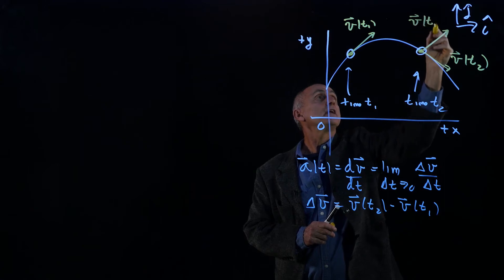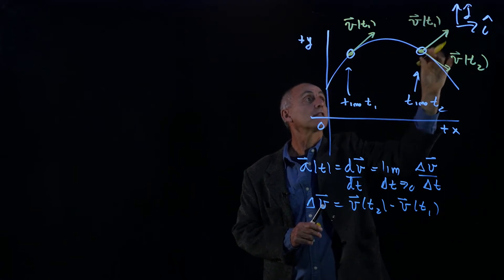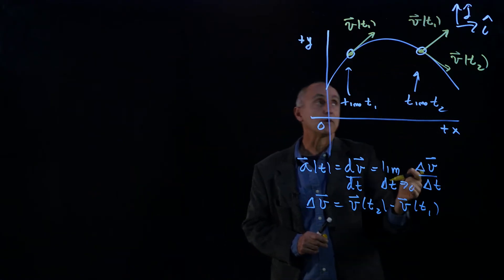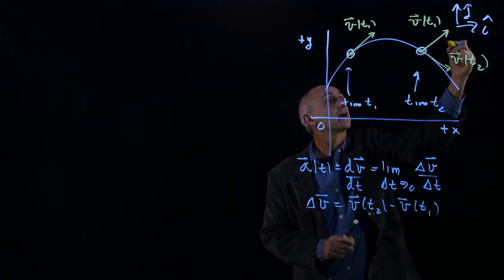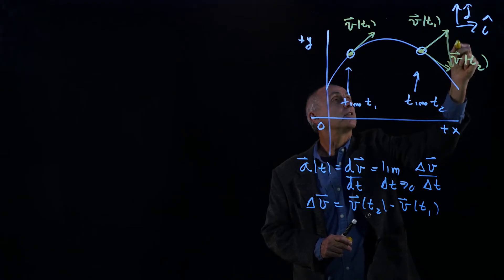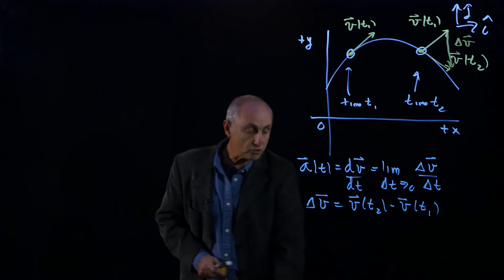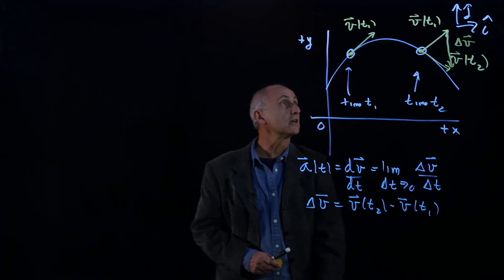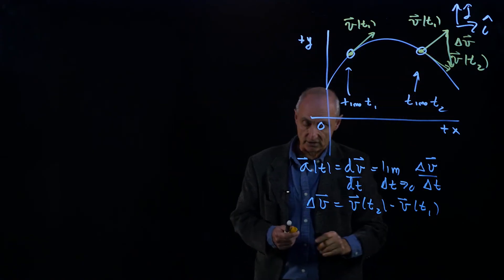That is still v at time t1. These vectors are equal, they have the same length, and they have the same direction. And so delta v is just the vector that connects here to there. That's what we mean by delta v. And so you can see in this particular case that it's not obvious from looking at the orbit what the delta v is.